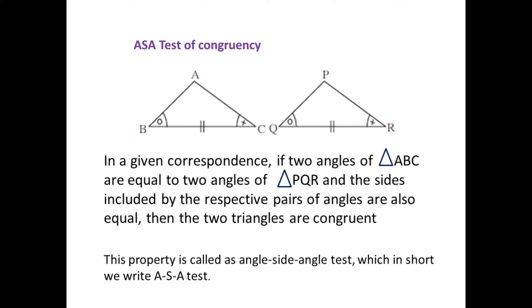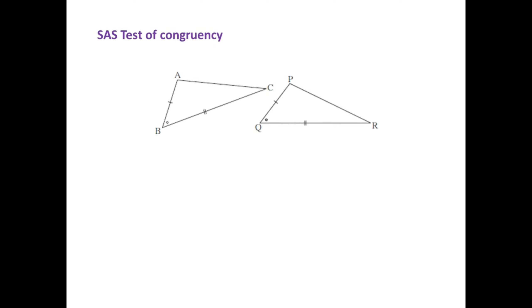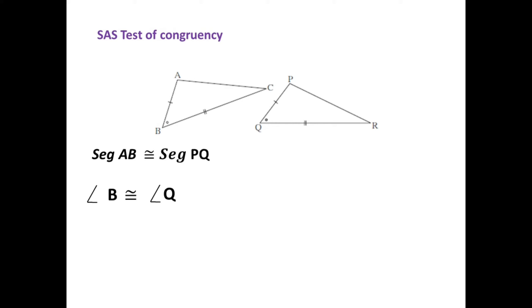This property is called the Angle Side Angle test, or ASA test of congruency. The next test is the SAS test — the Side Angle Side test of congruency. In the two given triangles, for the correspondence ABC and PQR, segment AB is congruent to segment PQ, angle B is congruent to angle Q, and side BC is congruent to side QR.